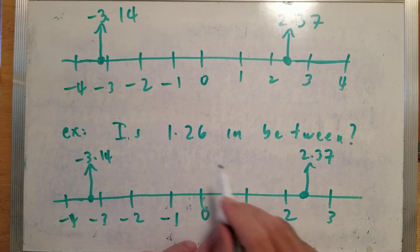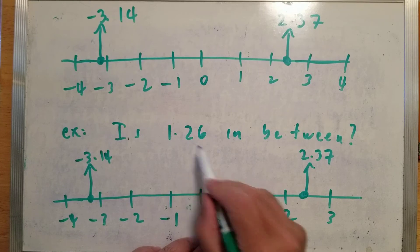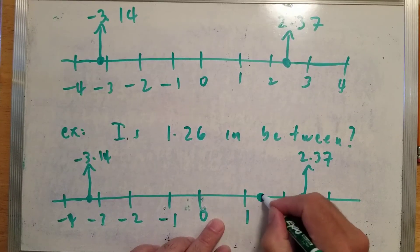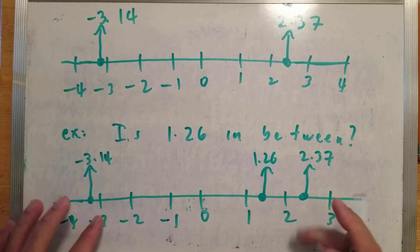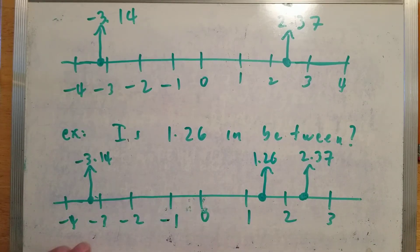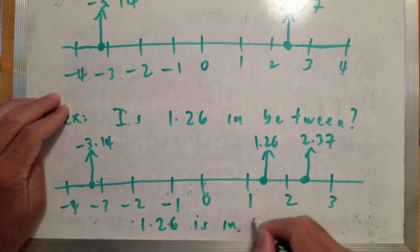So, where is 1.26? 1.26 is between one and two. Because it's two there, it's a little bit closer to one than it is to two. So, I'm going to say that 1.26 is about there. And notice it is in the region that's in between. So, yes, 1.26 is in between.